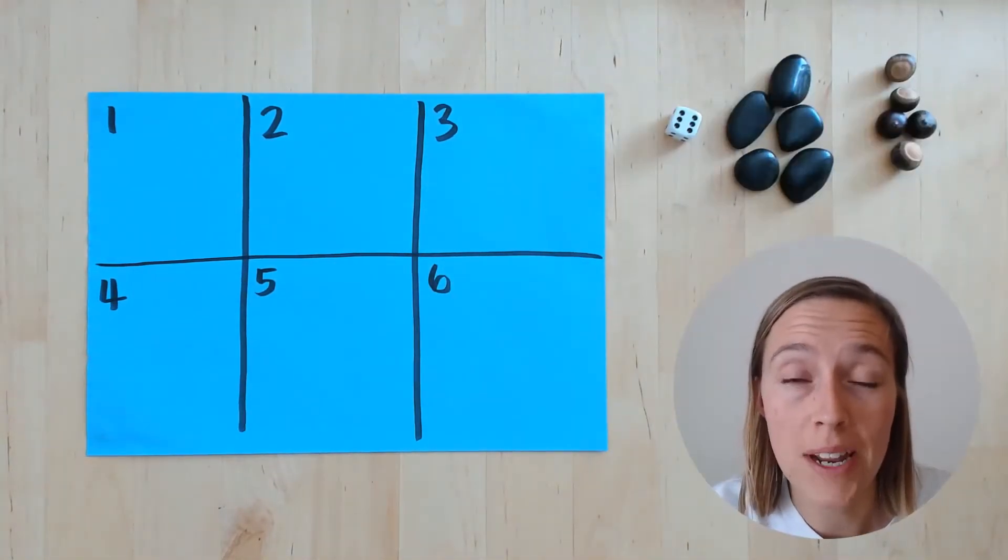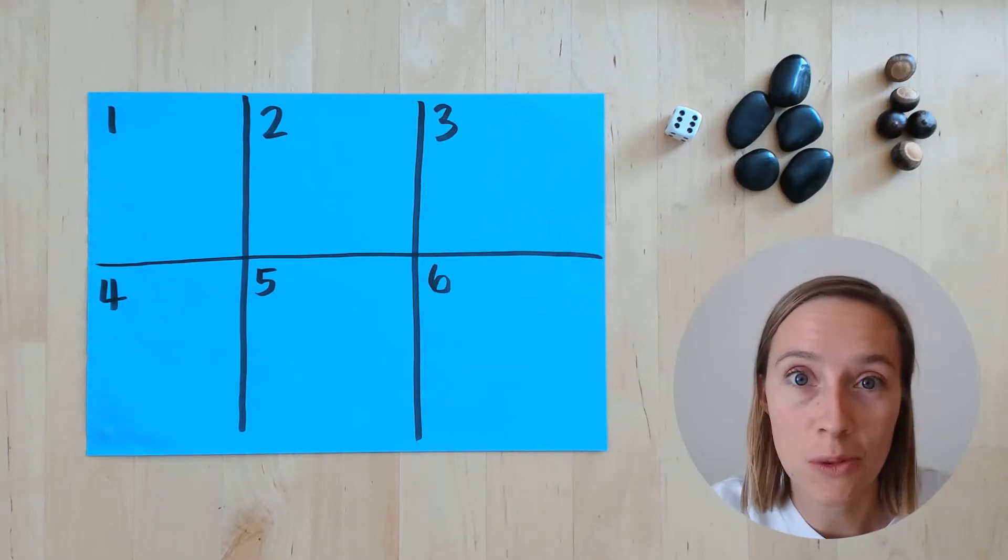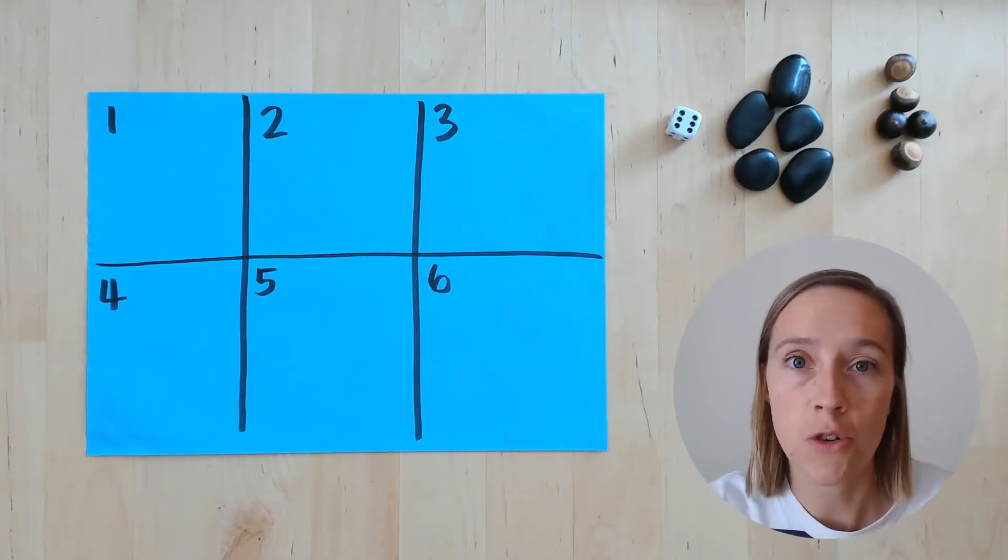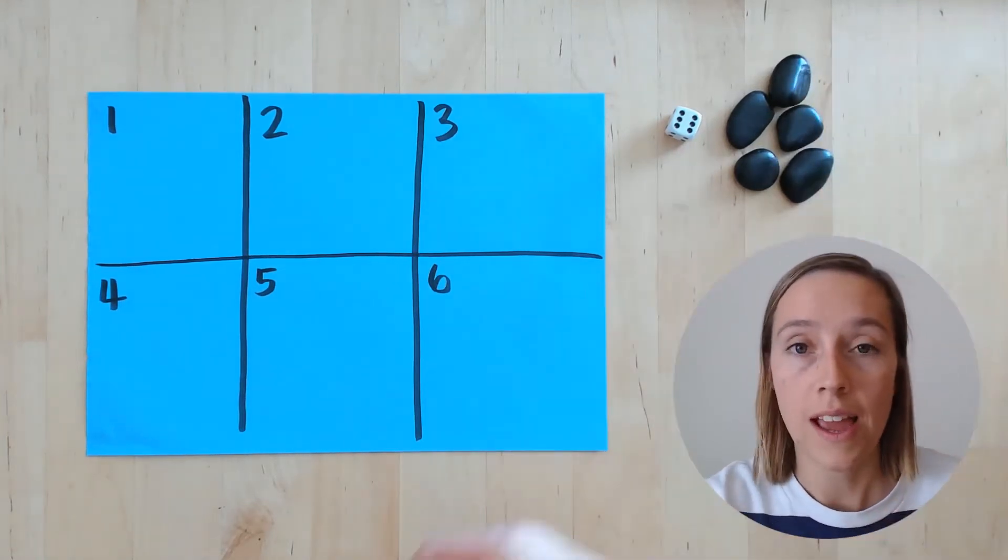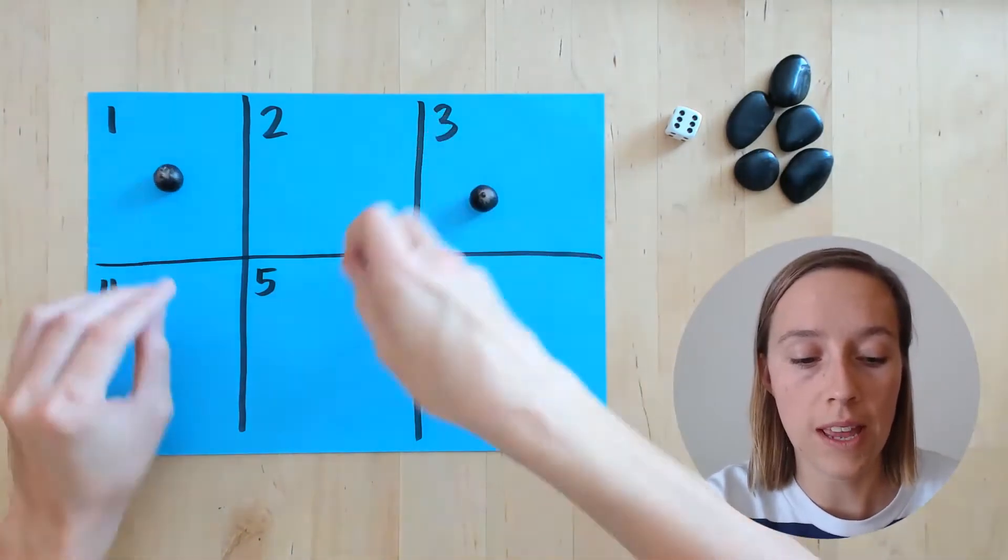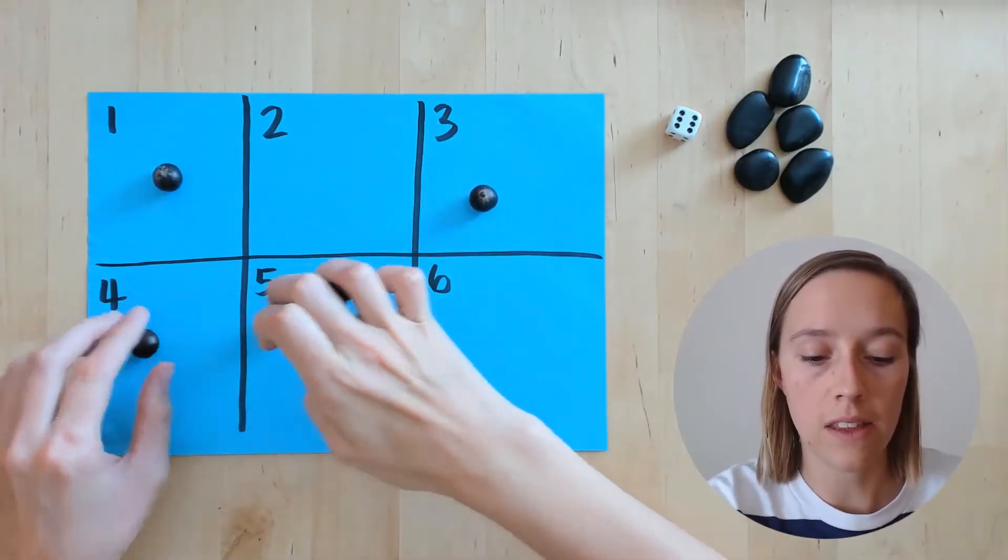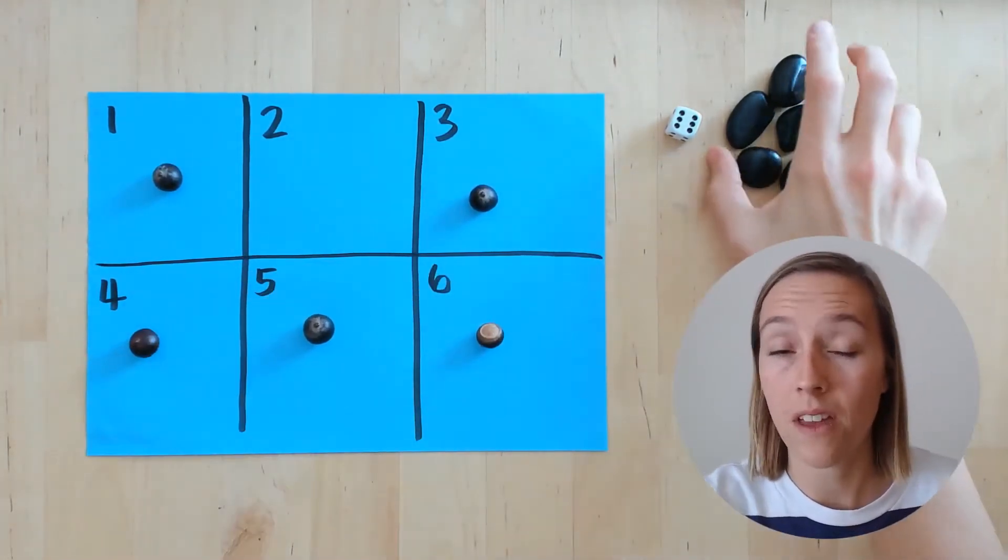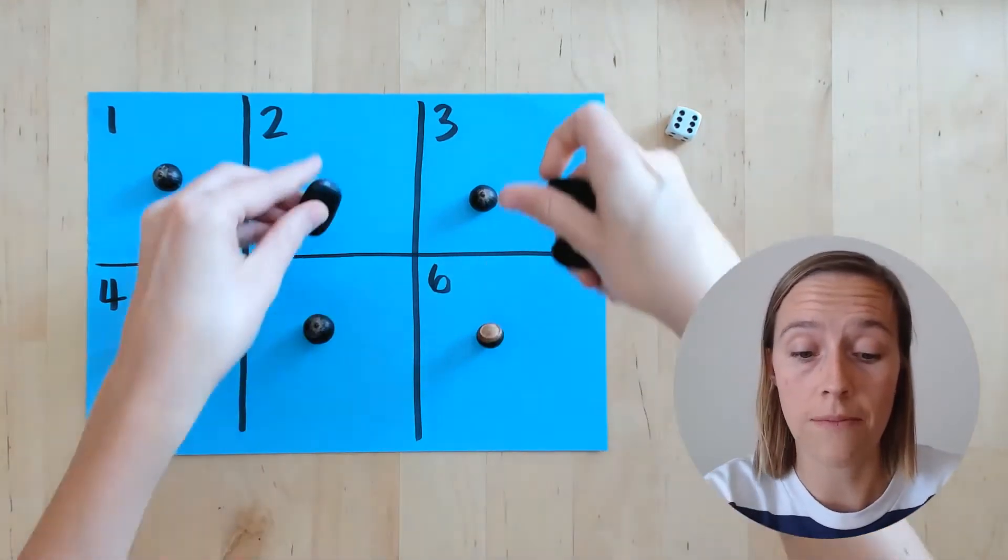So one player is going to play with the rocks and the other player is going to play with the acorns. The acorn person will take their acorns and put them wherever they like in the squares on the piece of paper. Then the rock person will do the same with their rocks.